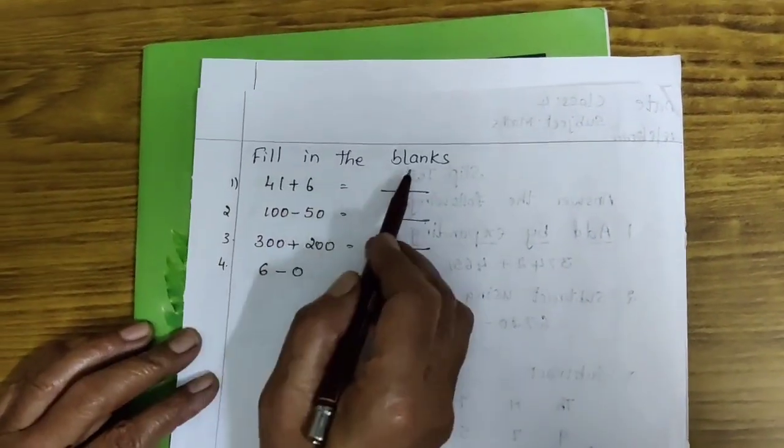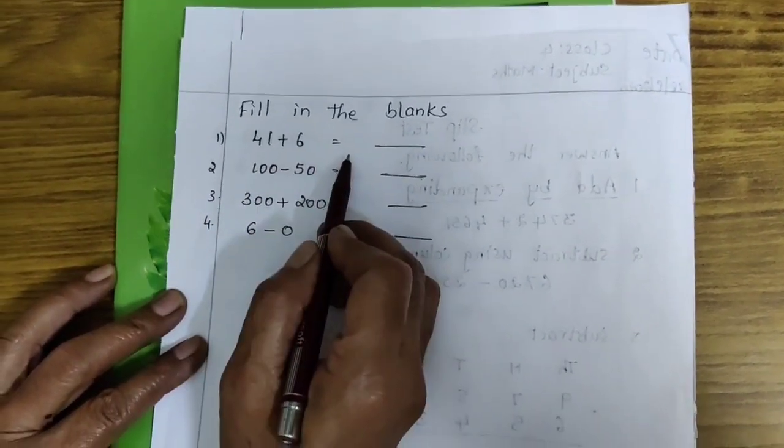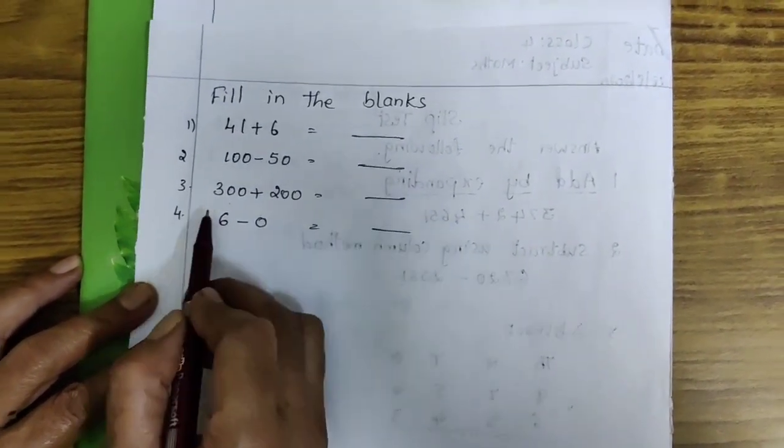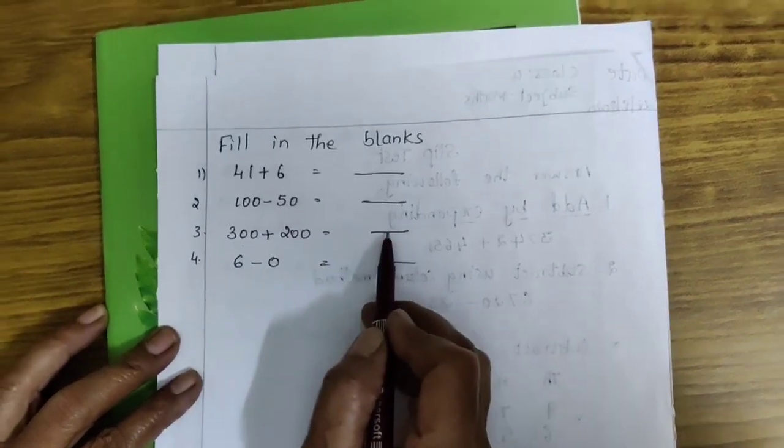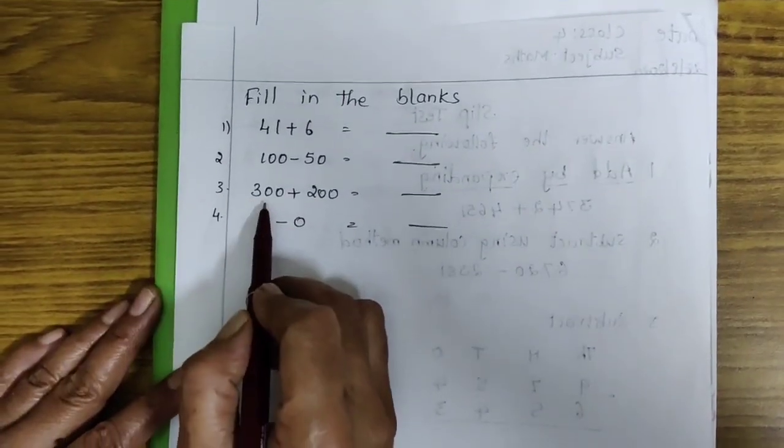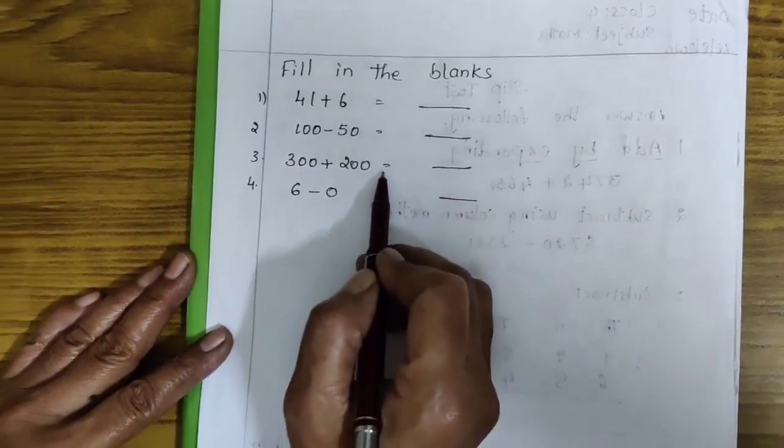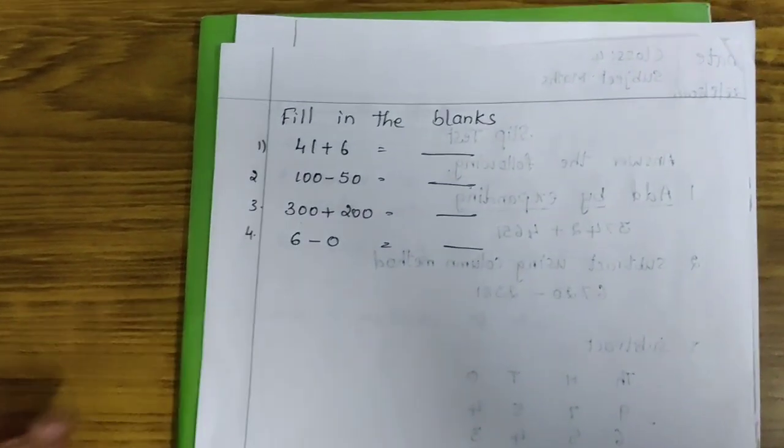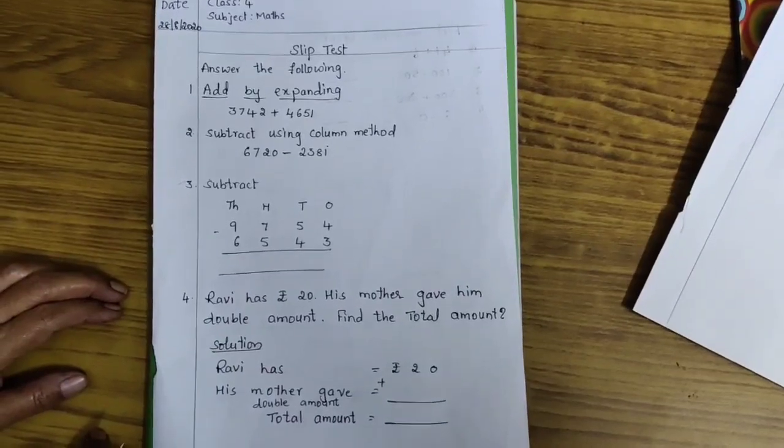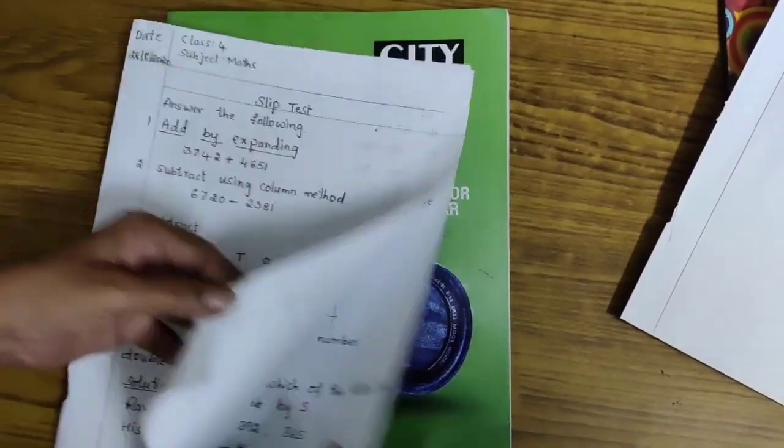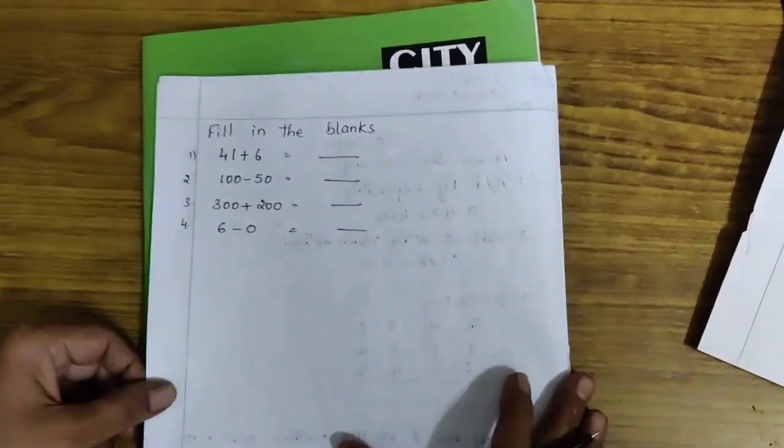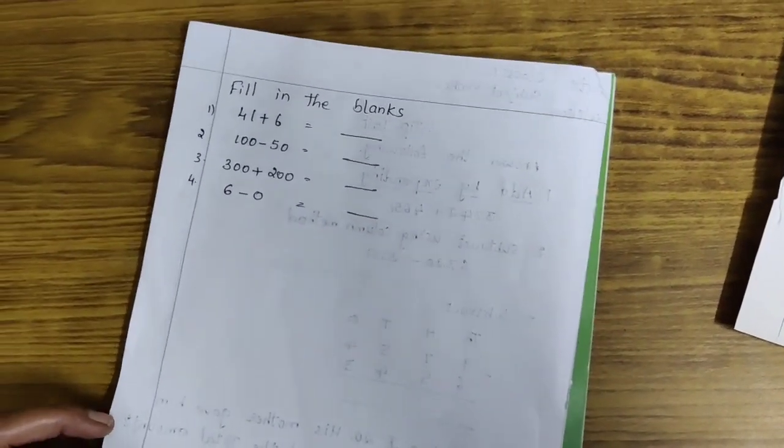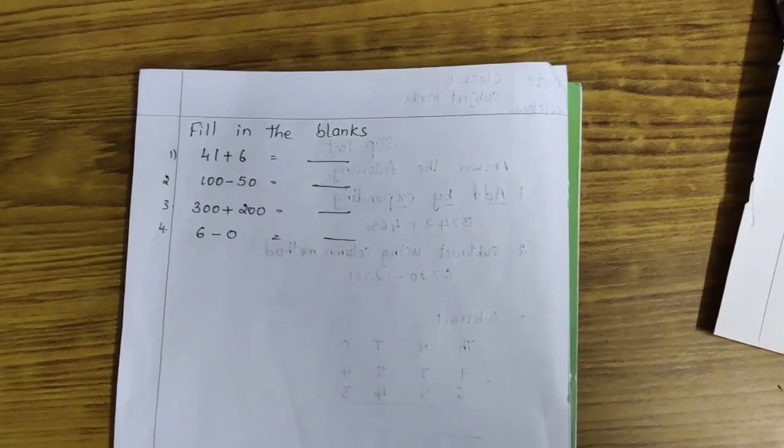Next, fill in the blanks. First one, 41 plus 6 is equal to dash. 100 minus 50 is equal to dash. 300 plus 200 is equal to dash. Next, fourth one, 6 minus 0 is equal to dash. Okay, children. Write it neatly in activity book. Thank you. We will meet in next class.